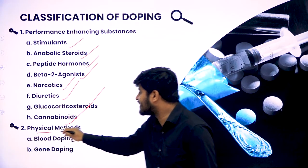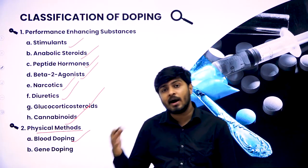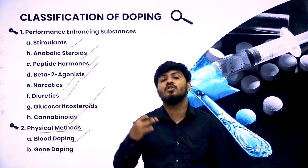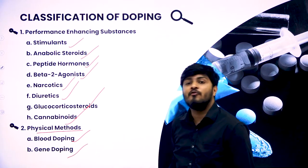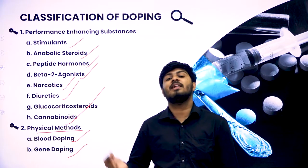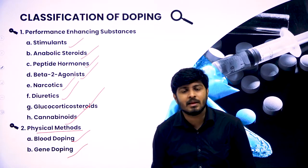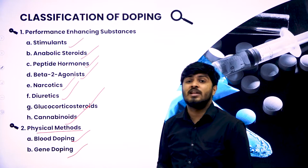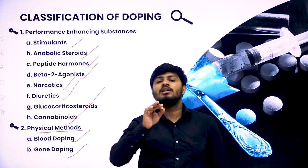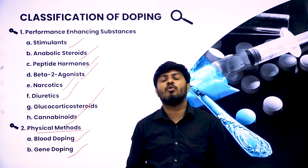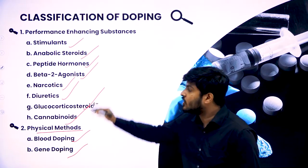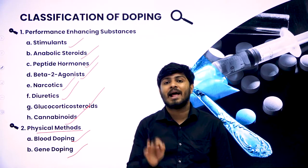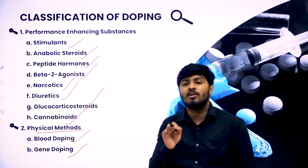Now we'll look into some physical methods by which they consume it. First is blood doping, where certain things in the blood are injected — the drugs are provided directly into the bloodstream for performance improvement. Then we have gene doping, where genetic scientists improve or modify the genetics of a person or athlete in order to make them perform better. All these methods and drugs are not recommended in sports, and if you take any of these you will be disqualified from events like the Asian Games, Commonwealth Games, and Olympics, which follow a very strict rule of prohibition. If these substances are found in an athlete's blood, they are rejected, blacklisted, and never allowed back into that sport.